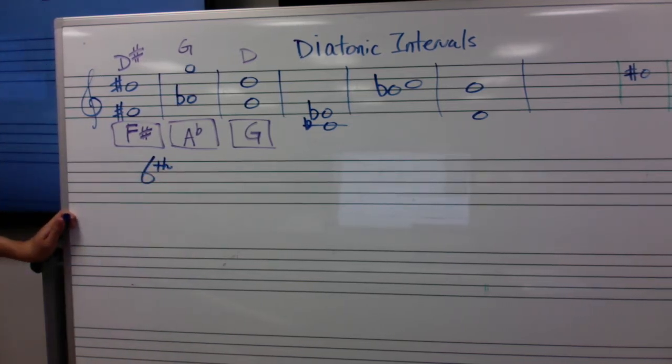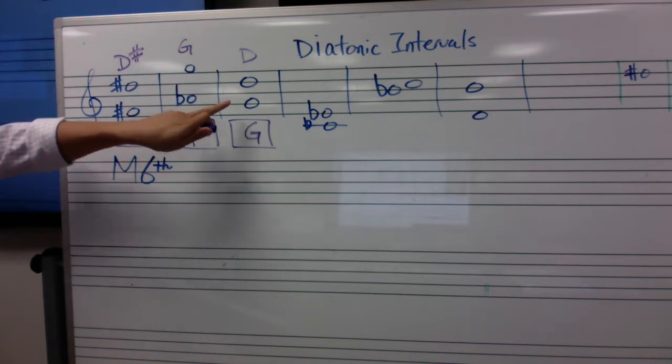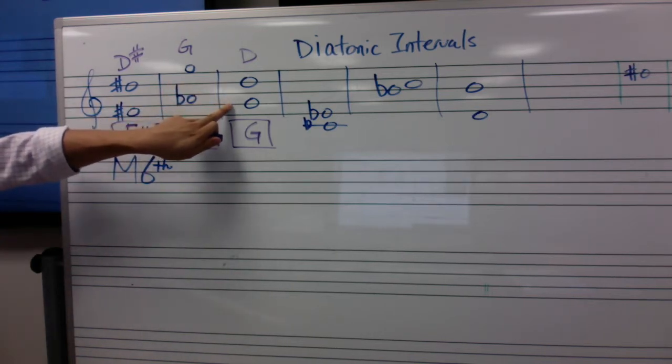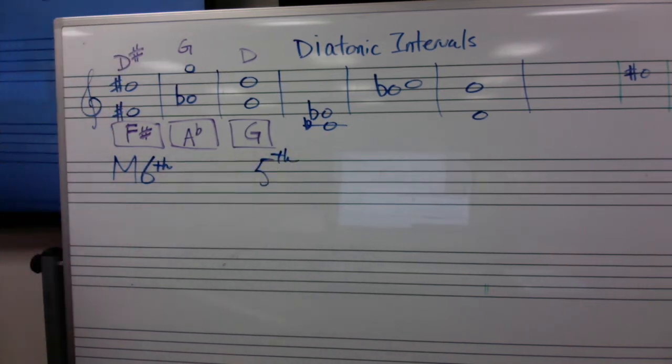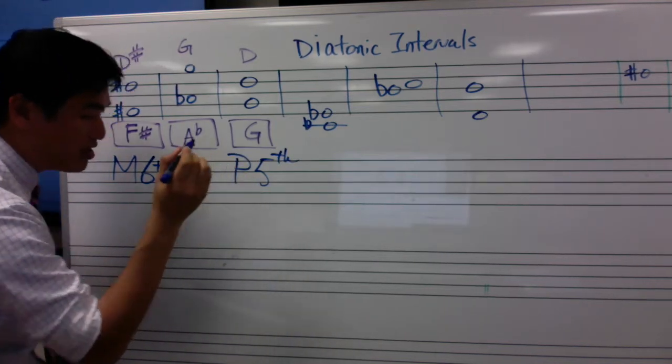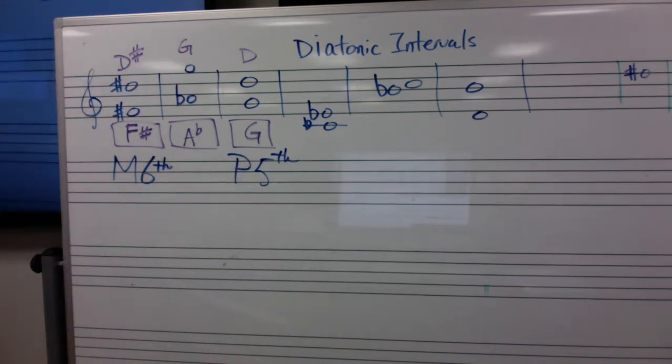Okay, if it's a diatonic interval, and that's a sixth, okay, we call it a major sixth. Oh, okay. Okay, and we move on here to this one, these two notes, okay? Nathaniel, what's the size of this interval? Five, so we call it a fifth, okay? Since it's a diatonic interval, it's called a perfect fifth, okay?